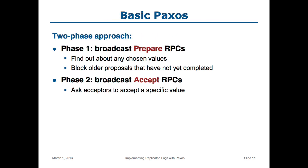This slide summarizes the mechanism for basic Paxos. As I mentioned, we have to use a two-phase approach. In the first phase, when a proposer is trying to get a value chosen, it sends out to all of the other servers an RPC called prepare. This serves two purposes: it tells us about any other values that might have been chosen so we can use that value instead of our own, and it blocks any other proposals that have not yet chosen their values so they can't compete with us. The prepare gets us to a point where it's now safe to ask people to accept our value. The second phase sends out another RPC called accept with a specific value for them to choose, and if a majority of them agree during this phase, then we can consider the value to be chosen.